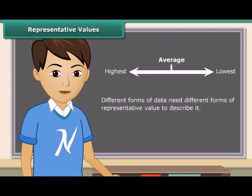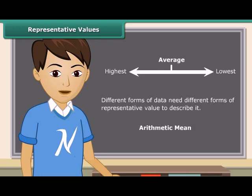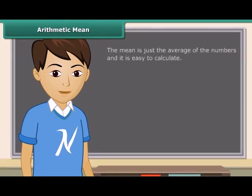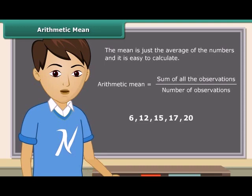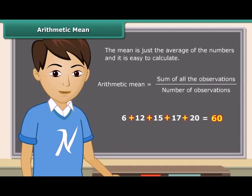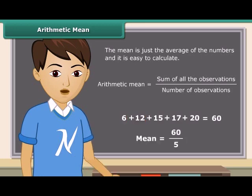Different forms of data need different forms of representative value to describe it. One of these representative values is the arithmetic mean. The mean is just the average of the numbers and it's easy to calculate. Mean is equal to the sum of all the observations divided by the number of observations. Let us calculate the mean of these numbers. The sum of these numbers is 60, and there are 5 numbers in total. So the mean is equal to 60 divided by 5, which equals 12. Therefore, the mean of the above numbers is 12.